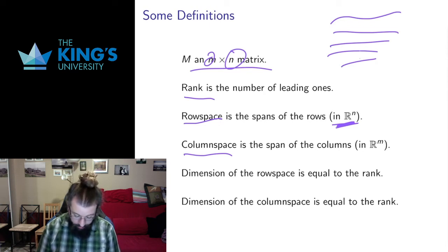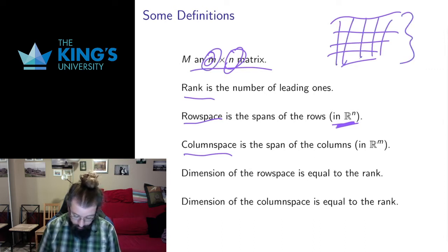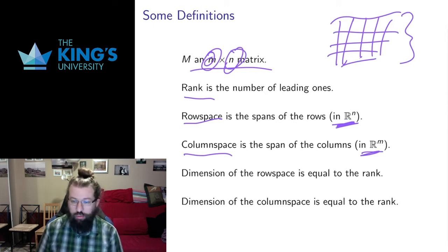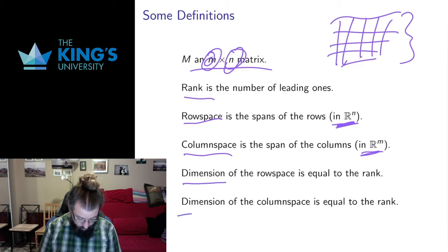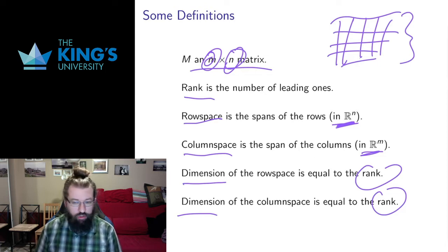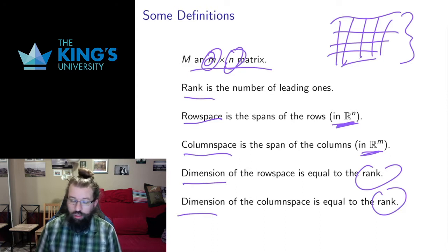Likewise the columns — I have n columns, but their length is the number of rows, which is m, so they exist as vectors in Rm. I can also ask for the span of the columns. Those are two linear subspaces I can consider. It turns out that each of them has dimension equal to the rank, and I'm going to state that without proof. It can be proved but we will not do that in this video. The dimension equals the number of leading ones in the reduced row echelon form — that tells you how many rows are linearly independent, and also how many columns are linearly independent.